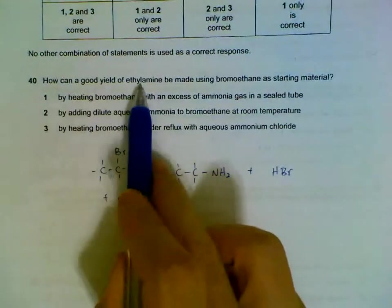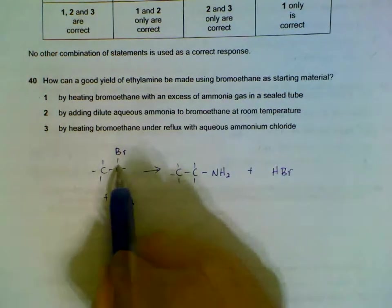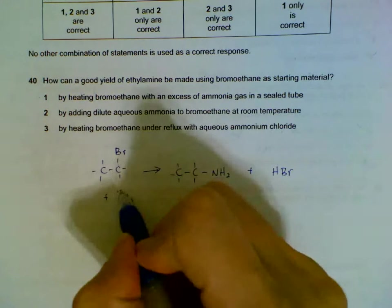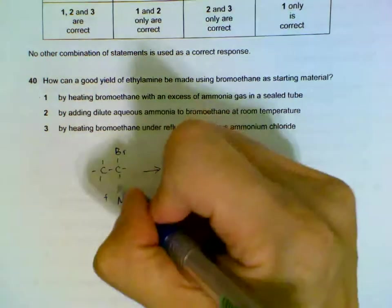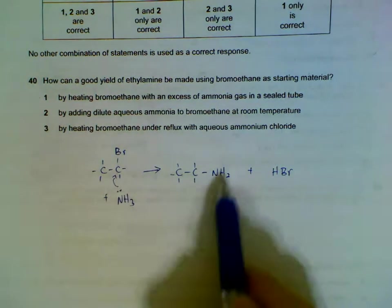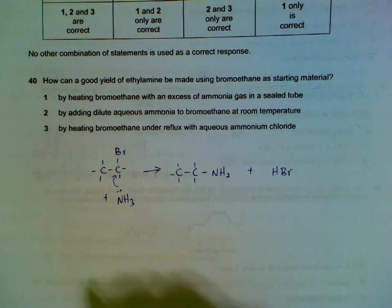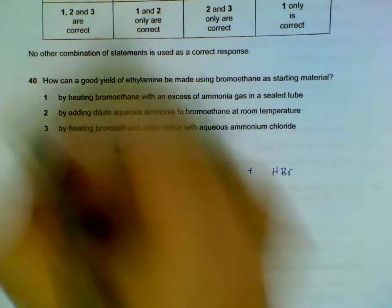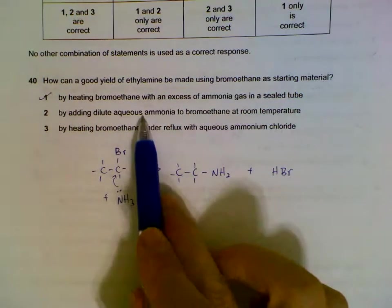Question 40: How can we get ethylamine using bromoethane? So we have your bromoethane, your ammonia. Our ammonia will be our nucleophile. If you use excess of it, it will react to form our ethylamine in a nucleophilic substitution reaction. So the first one is correct.